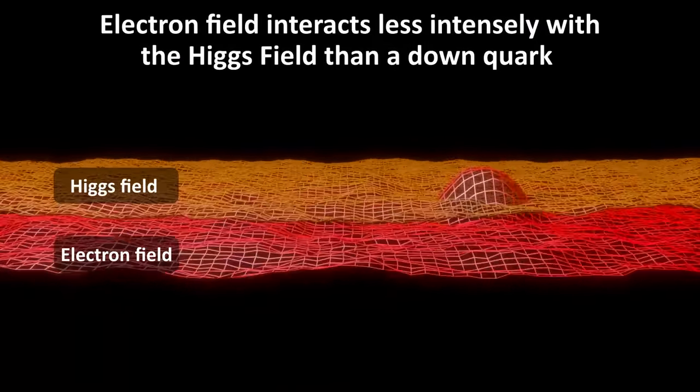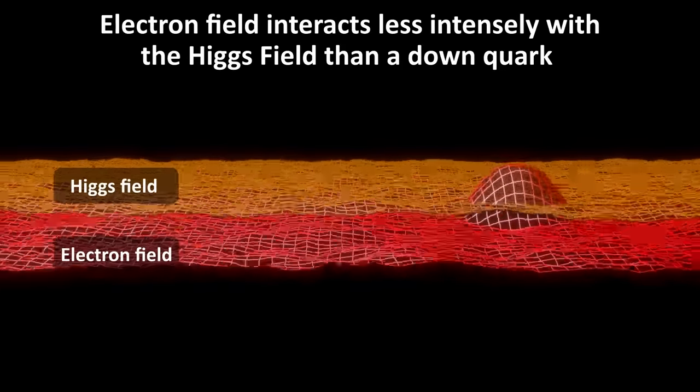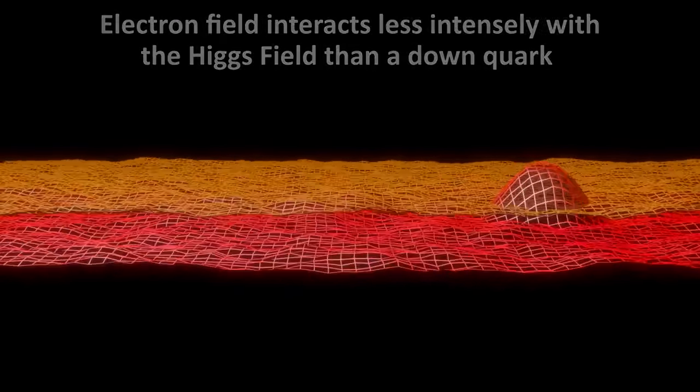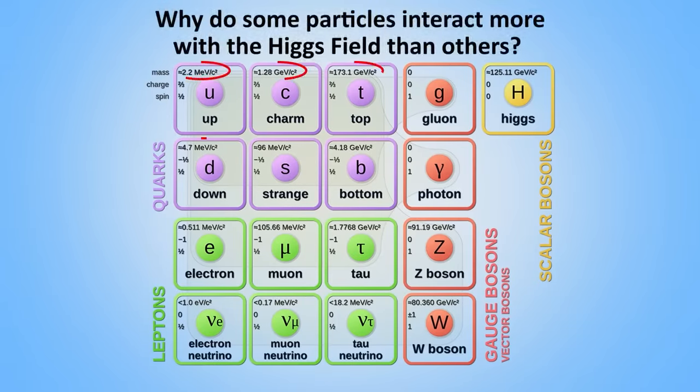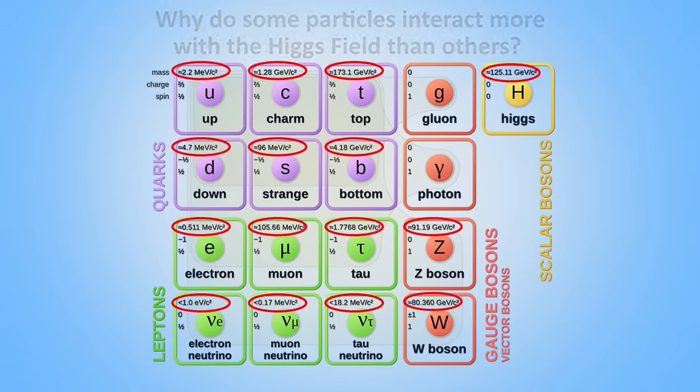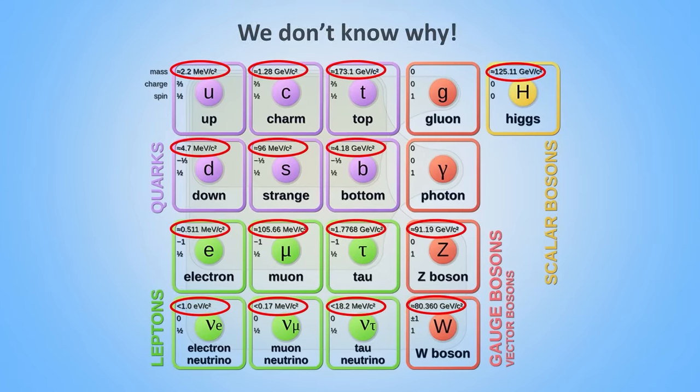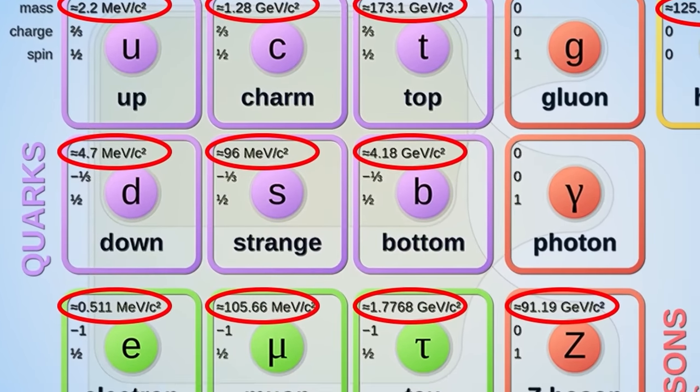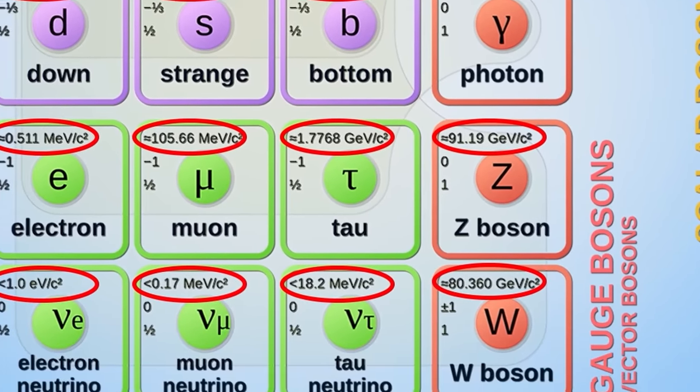Similarly, all elementary particles that have mass interact with the field to some degree. Why do some particles interact more with the Higgs field than others causing them to have more mass? We don't know the answer to that. It just seems to be a fundamental property of different particle types.